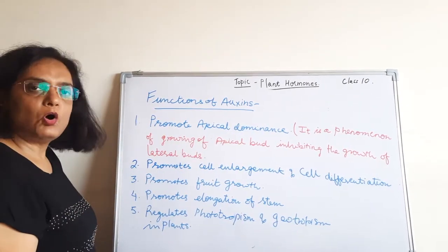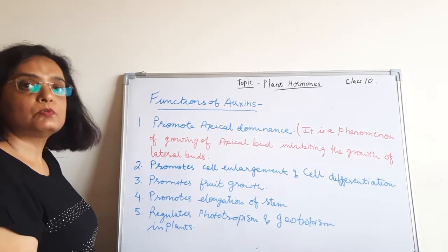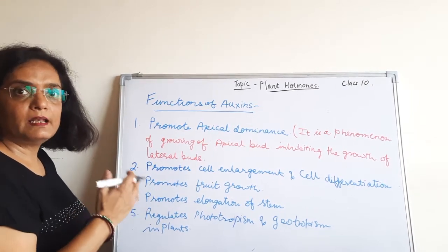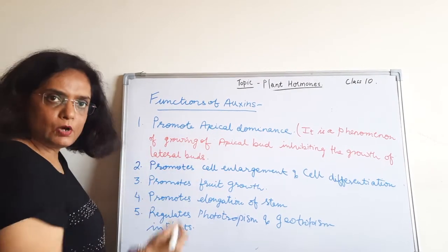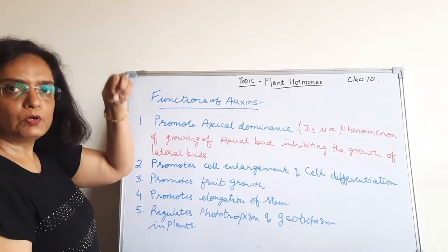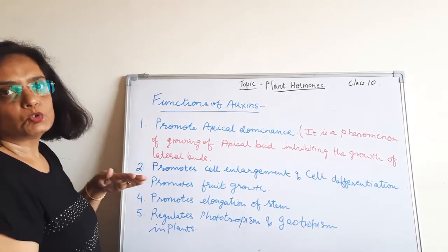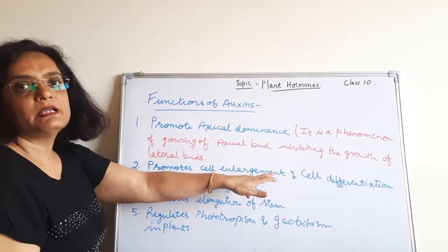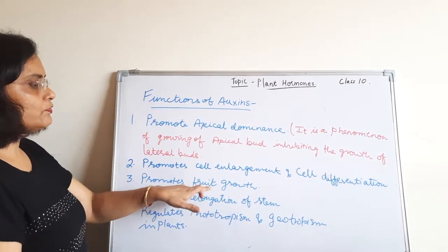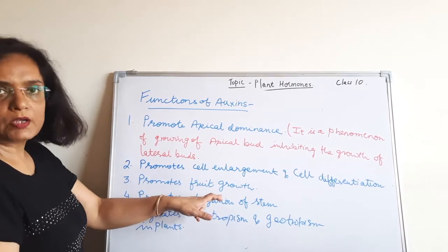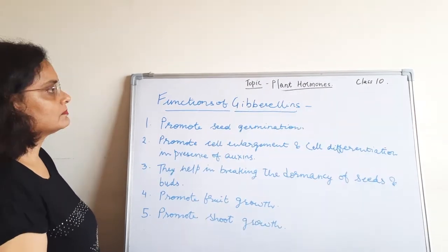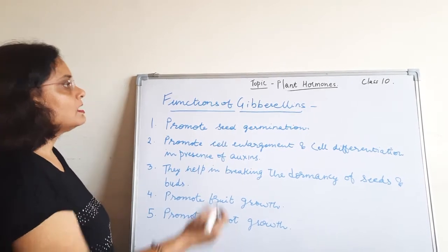Now, the functions of auxin. Auxin is a plant growth promoter, so it will promote the activities that help in the growth of the plant. It promotes apical dominance, which means the apical bud will grow and inhibit the growth of lateral buds. It promotes cell enlargement, cell differentiation, and root growth. Auxins also promote elongation of the stem and regulate phototropism and geotropism in plants.